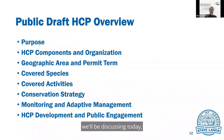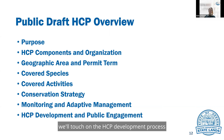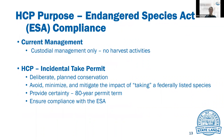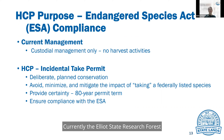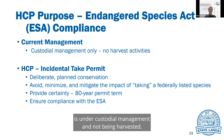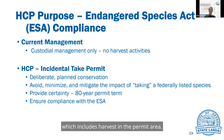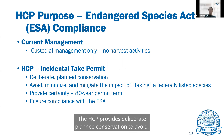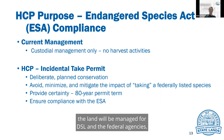I'd like to start with an overview of what we'll be discussing today, which includes: purpose — why is DSL pursuing an HCP? — HCP components and organization, including the key topics of geographic area, permit term, covered species and activities, conservation strategy, and the monitoring and adaptive management plan. And in closing, we'll touch on the HCP development process and public engagement. So why an HCP? The purpose of the HCP is to ensure compliance with the Endangered Species Act. Currently, the Elliott State Research Forest is under custodial management and not being harvested due to the presence of ESA-listed species. The development of an HCP and issuance of an incidental take permit would allow the Department of State Lands to be compliant with the Endangered Species Act while continuing to perform the covered activities, which includes harvest in the permit area. The HCP provides deliberate planned conservation to avoid, minimize, and mitigate for taking a federally listed species. Further, the HCP provides certainty around how the land will be managed for DSL and the federal agencies.